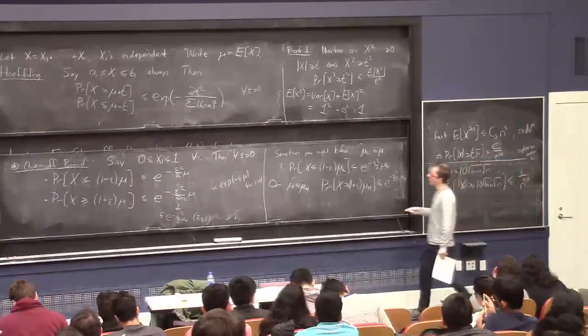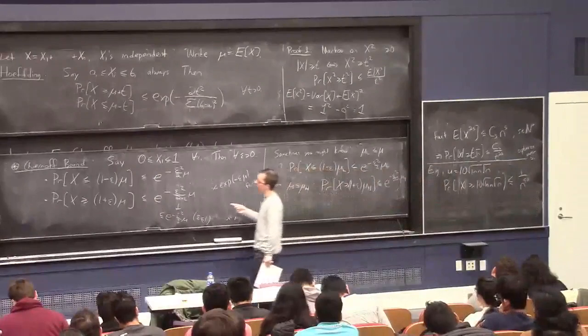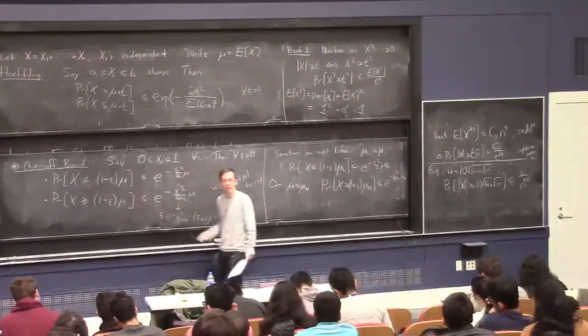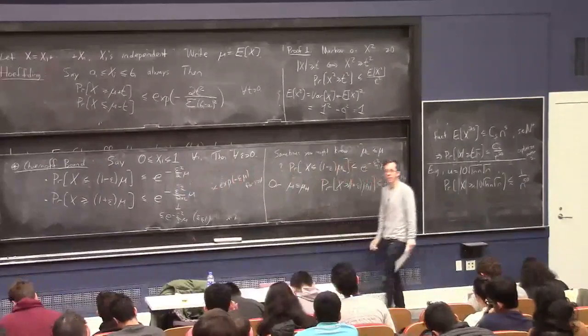But I'm here to tell you that this is still true. So, basically, if you do this intuitive move like, well, I don't quite know the mean, but I know a bound on the mean, which should make the thing I'm trying to bound even smaller, then you can plug that bound on the mean into the theorem and it's still true.